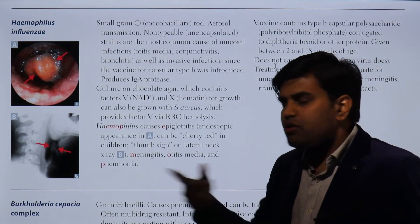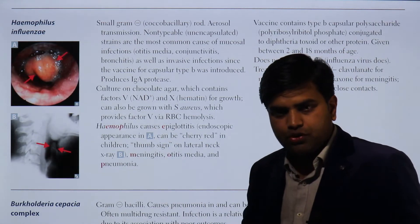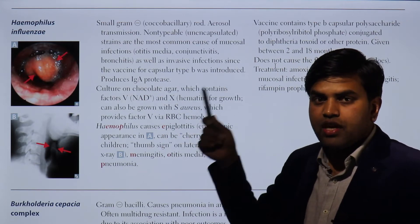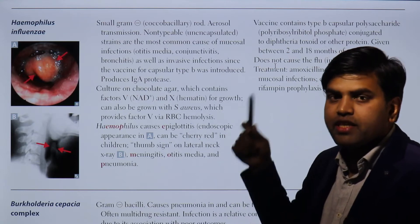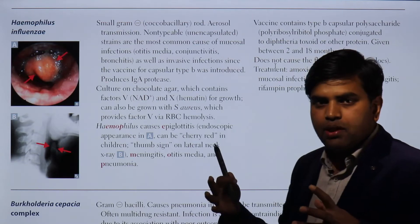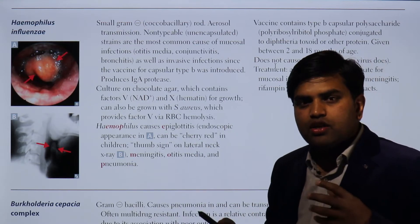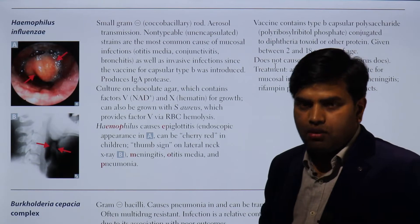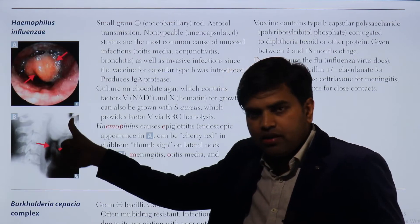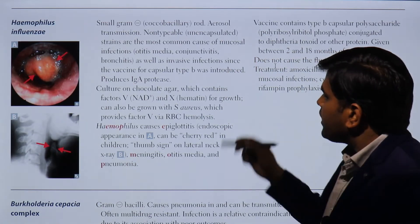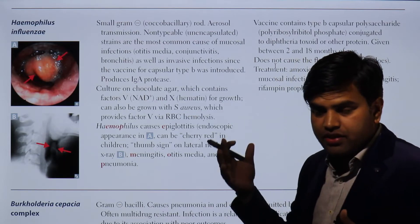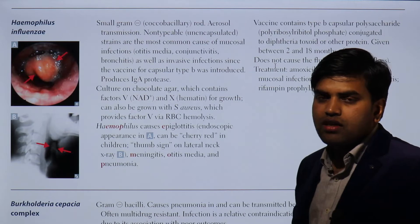On a normal lateral neck X-ray you would not see this structure, because it is not swollen. But in a patient with epiglottitis due to Haemophilus influenzae type B — the capsulated type — the swelling causes the epiglottis to appear as a thumb sign on X-ray. On endoscopy, you can also see the cherry red appearance. Remember: Haemophilus epiglottitis gives a thumb appearance on lateral neck X-ray.